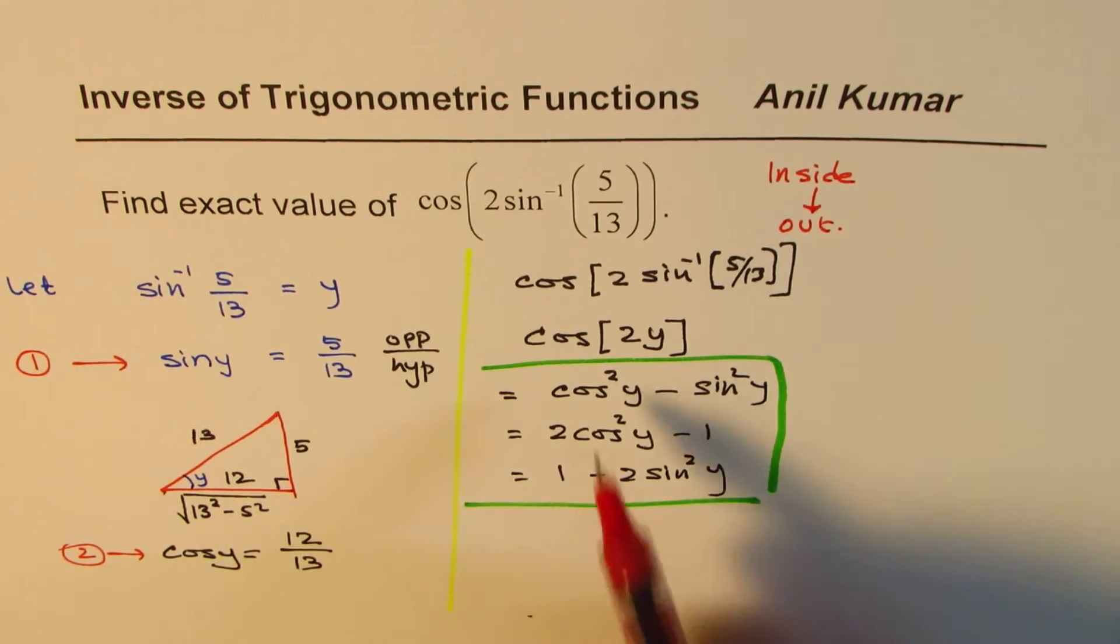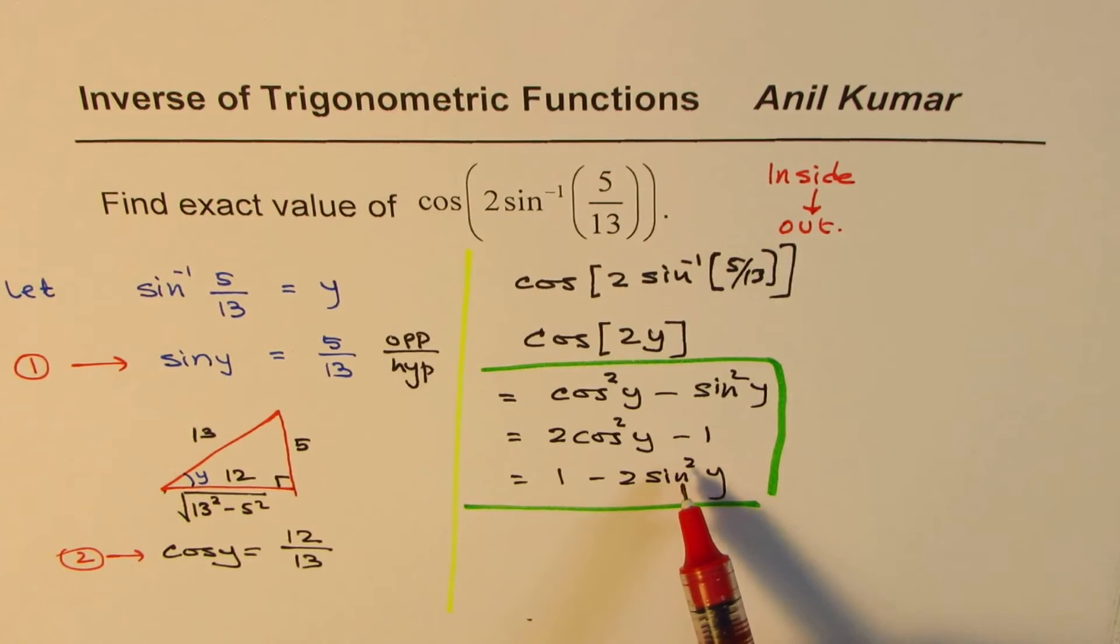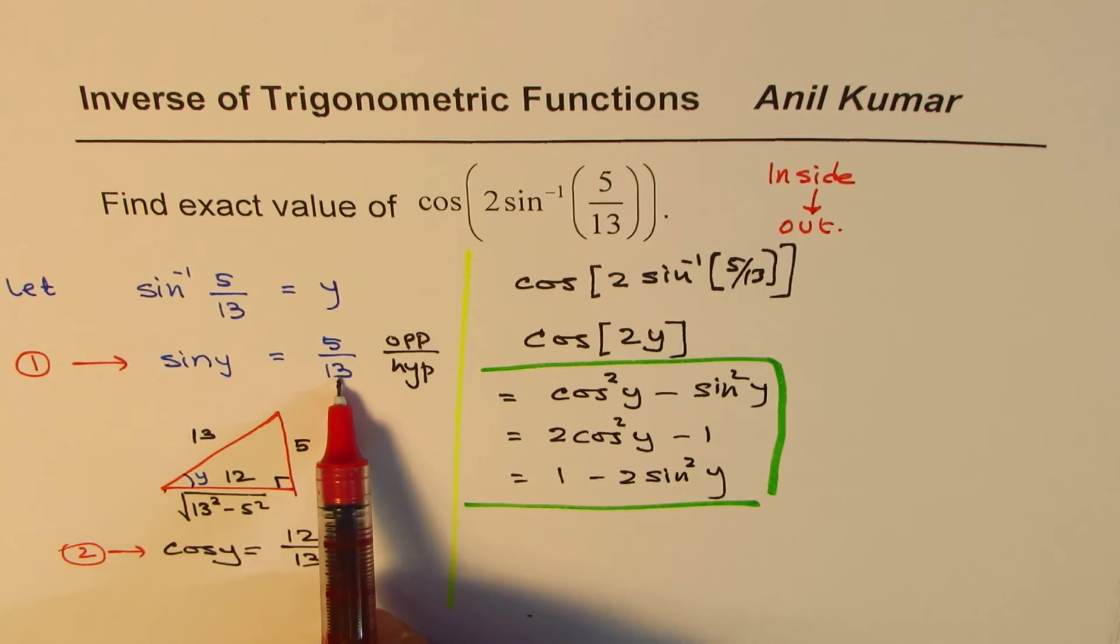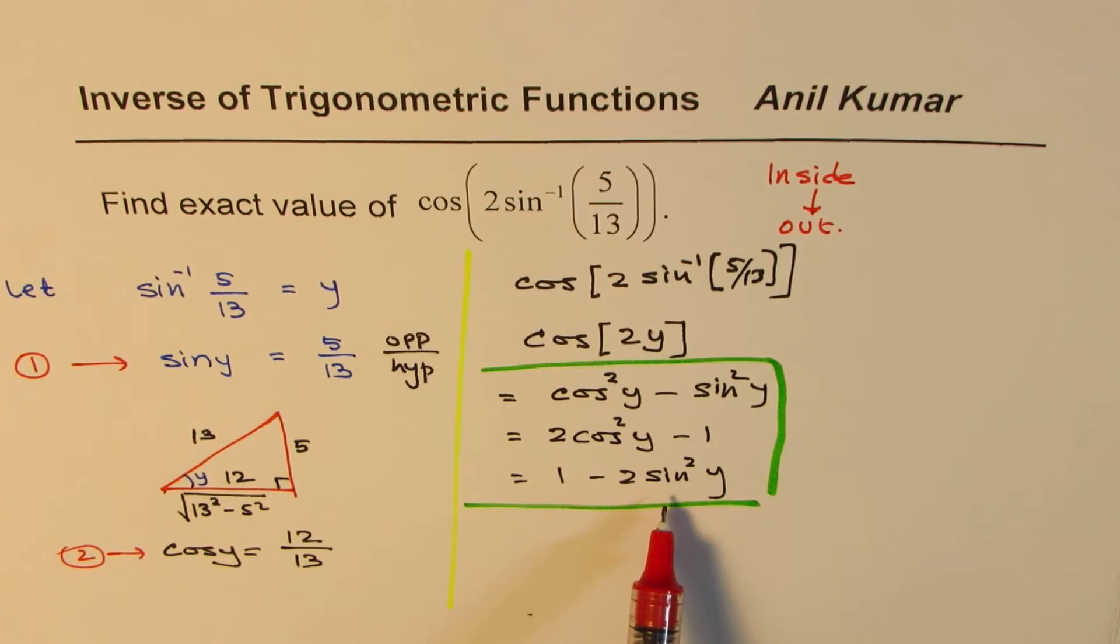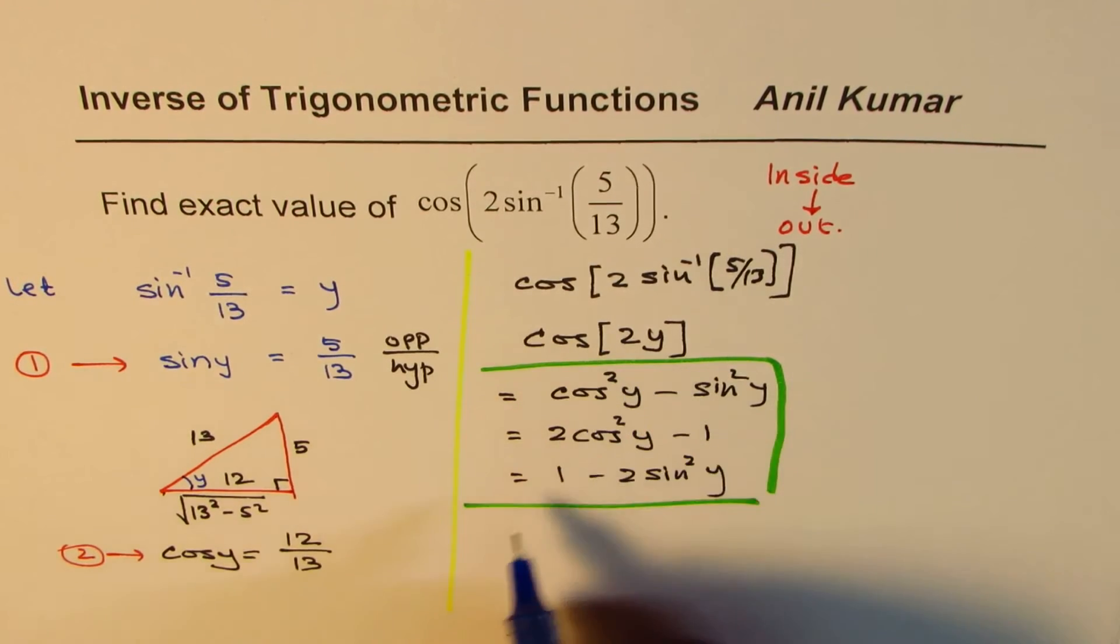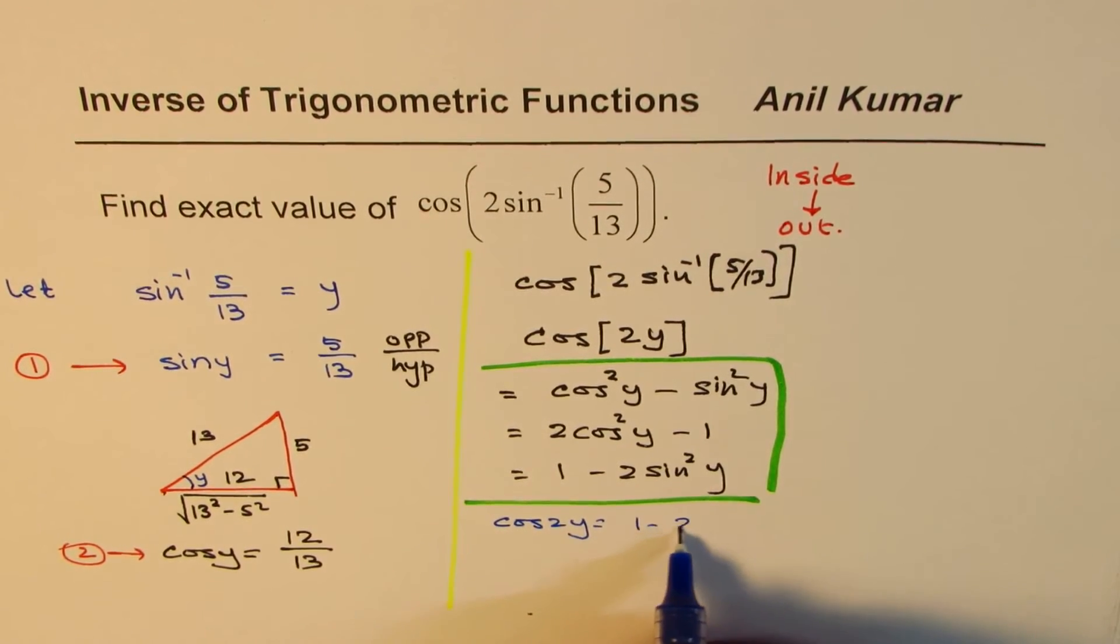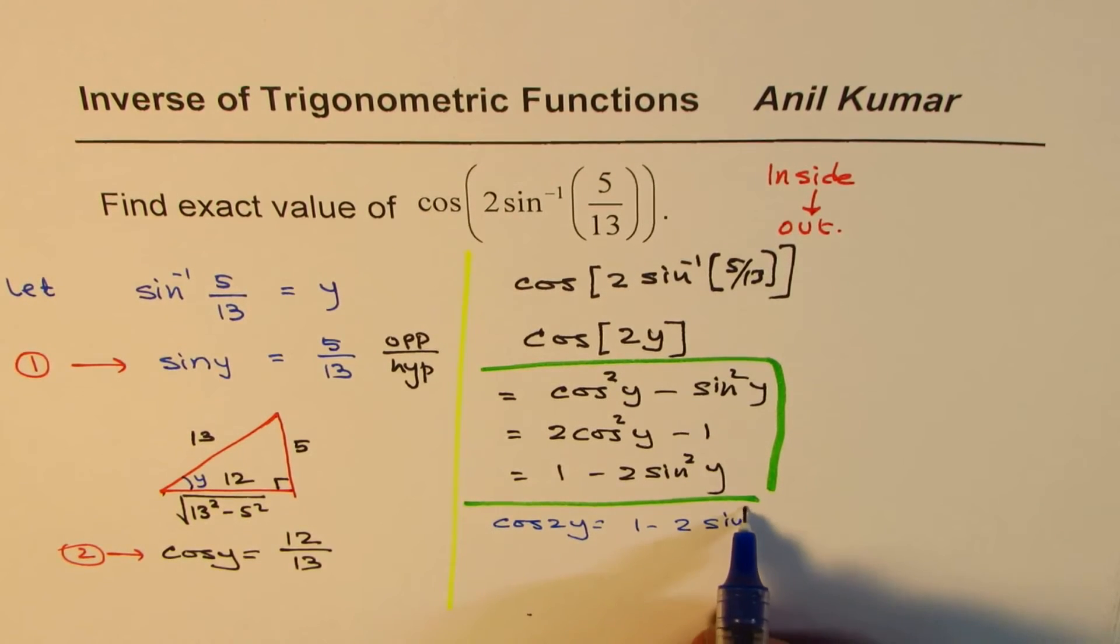Now you need to find cos(2y). Which one should you use? Well, in this particular case, since we are given sin(y) is 5/13, the third one is better to use. So what we will do here is we'll use cos(2y) as equal to 1 - 2 times sin²(y).